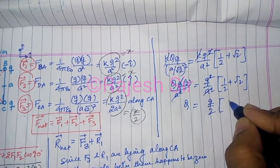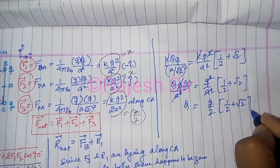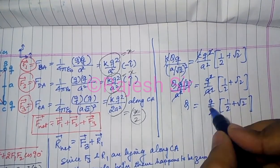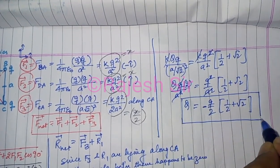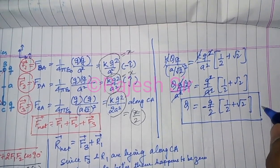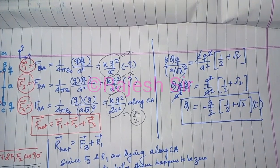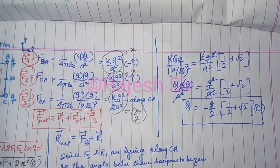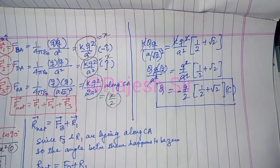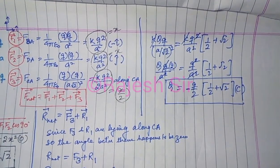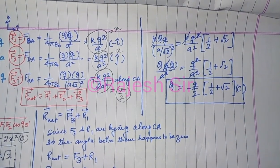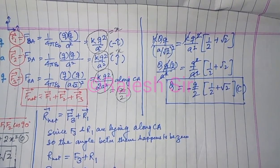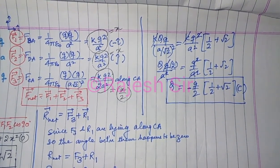Since Q must be negatively charged, the final answer is capital Q = −q/2 × (1/2 + √2) coulombs. That's the answer! Please like, comment, and share with your friends, subscribe to stay motivated for more videos, and feel free to ask questions. Thank you!